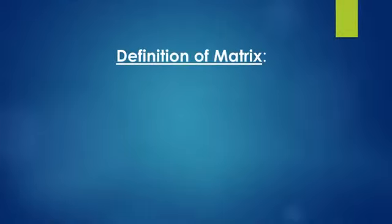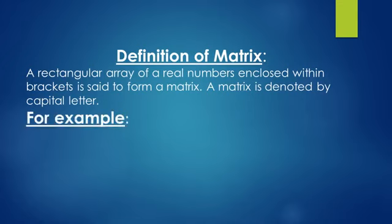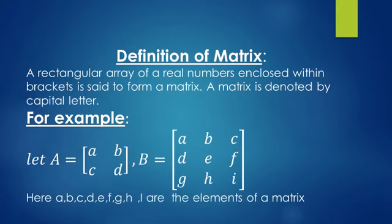Definition of matrix: a rectangular array — meaning an arrangement of real numbers enclosed within brackets — is said to form a matrix. A matrix is denoted by a capital letter. For example, let A be a matrix with elements a, b, c, d; and B be a matrix with elements a, b, c, d, e, f, g, h, i. Here a, b, c, d, e, f, g, h, i are the elements of the matrix.